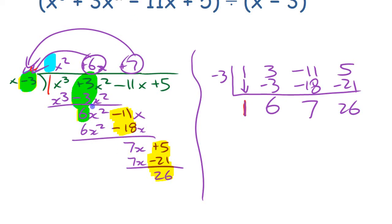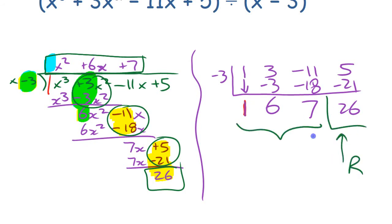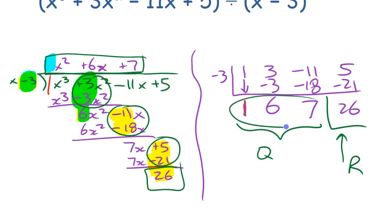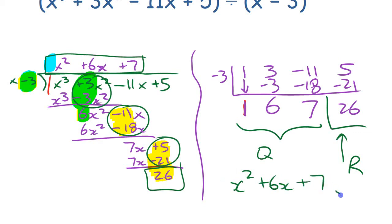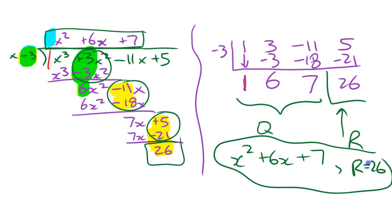This is just focusing on the second coefficient you get each time. The result below is your quotient and remainder. Since you started with a cubic, your quotient is a quadratic — degree two — so that represents x squared plus 6x plus 7, and the remainder is 26. That's synthetic division and how it compares to long division.